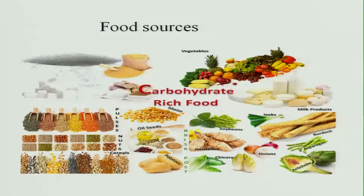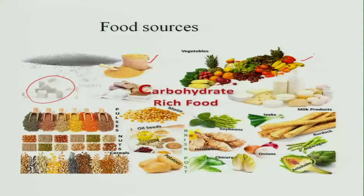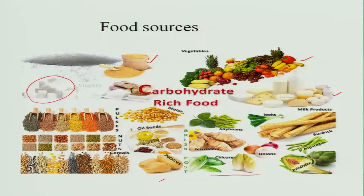Food sources of carbohydrates include all cereal grains. Sugar is a concentrated source and the only pure source of carbohydrate — one teaspoon of sugar contains 5 grams, providing 20 kilocalories directly. Other sources include fruits and vegetables, milk, meat, eggs, pulses, nuts, cereals, oil seeds, potatoes, roots and tubers, and beans. All these are rich food sources of carbohydrates.